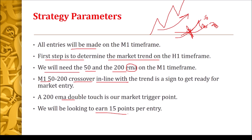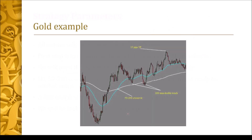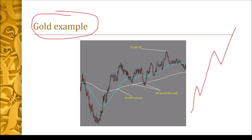Here is an example snipped on Gold. The first step was to determine the H1 bias, which was up. After that, we needed a 50/200 EMA crossover, then waited for a double touch of the 200 EMA. On the second touch, that is where we entered the market, and the market went up to our target. It's a scalp trade — you get in and get out very fast, with several entries per day.